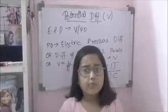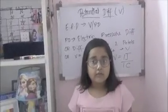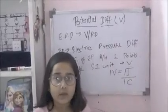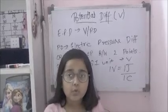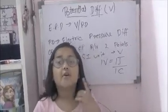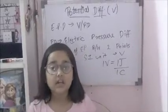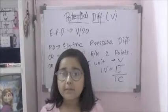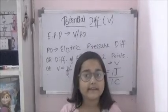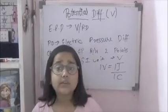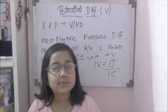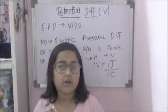Now, what is one volt? One volt is when one joule of work done is required to bring one coulomb of charge from one point to the other. We measure potential difference with a voltmeter, which is always connected in parallel and always has high resistance.